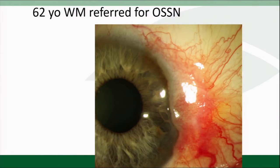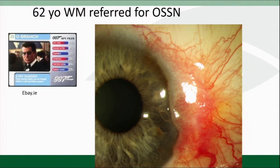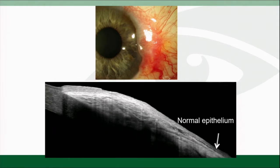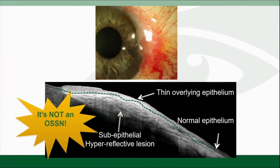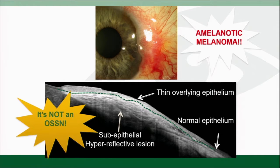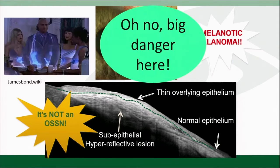Here's a final case of a patient sent in for OSSN. When scanned, I see normal epithelium on the edge and slightly hyperreflective changes, but the main lesion is subepithelial. This is not OSSN — this was a melanotic melanoma, a big danger.